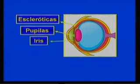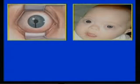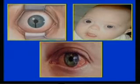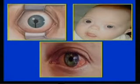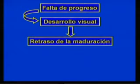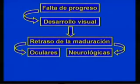En el examen de las escleróticas, pupilas e iris, precisarás alteraciones o problemas congénitos como los colobomas, los cuales pueden observarse a simple vista, y las manchas de Brushfield, muy indicativas del síndrome de Down. A nivel de la conjuntiva, se puede detectar inflamación y enrojecimiento. Todas estas alteraciones las encontrarás en la galería de imágenes del CD de la asignatura. La falta de progreso en el desarrollo visual sugiere retraso de la maduración. De identificarse anormalidades oculares o neurológicas, resulta necesaria la exploración con el oftalmoscopio.